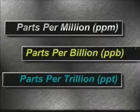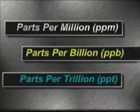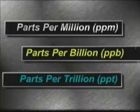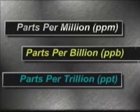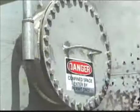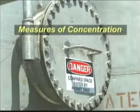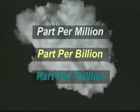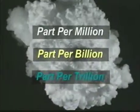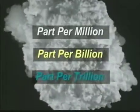Parts per million (PPM), parts per billion (PPB), and parts per trillion (PPT) are the most commonly used terms to describe very small amounts of contaminants in our environment. They are measures of concentration — the amount of one material in a larger amount of another material. An example might help illustrate the parts per million, parts per billion, and parts per trillion equations.